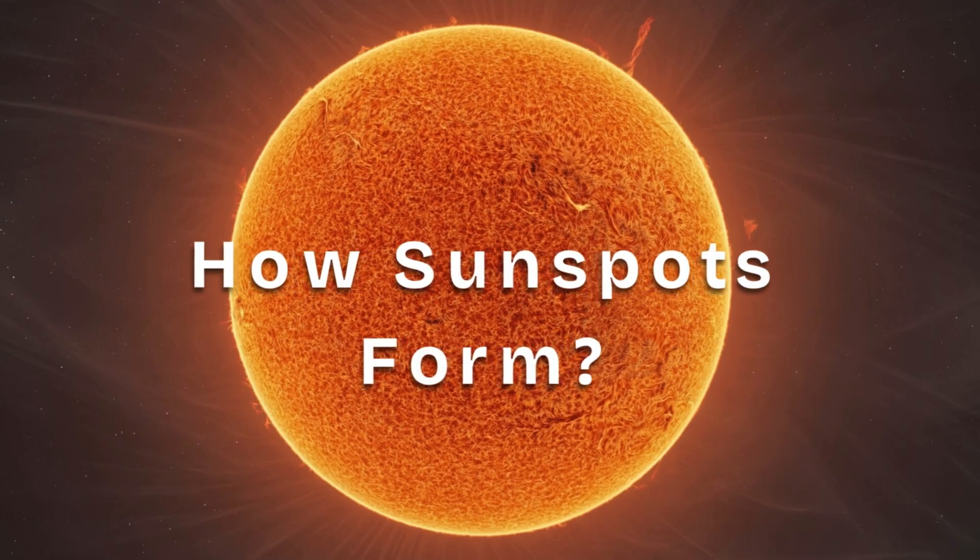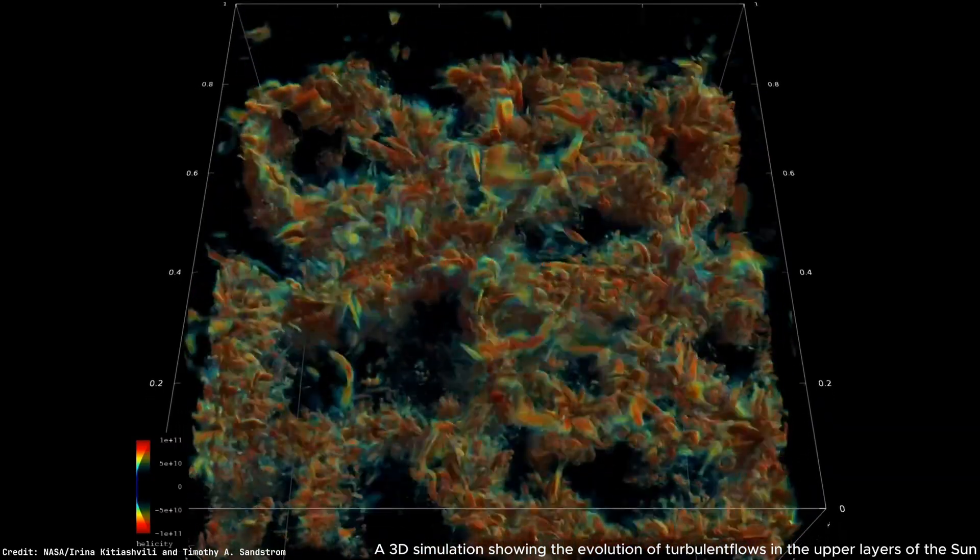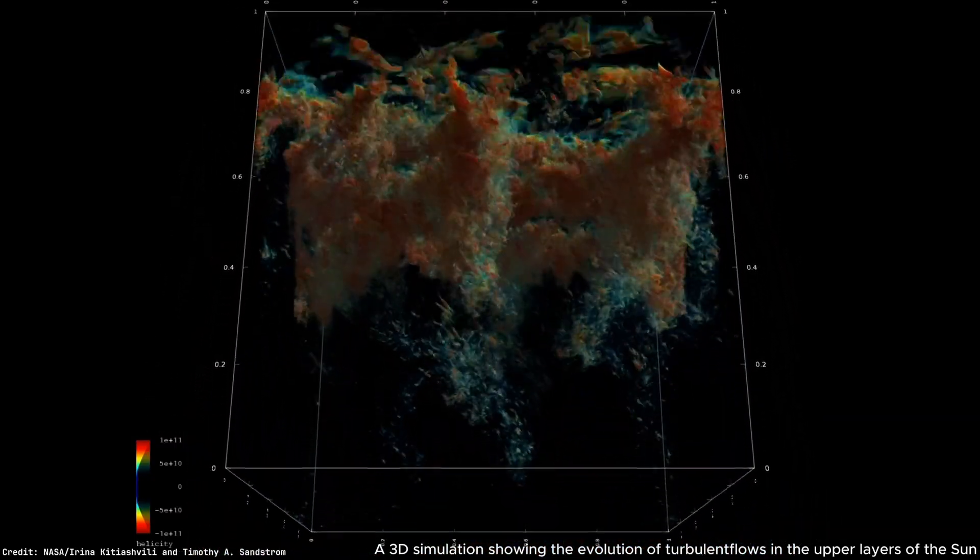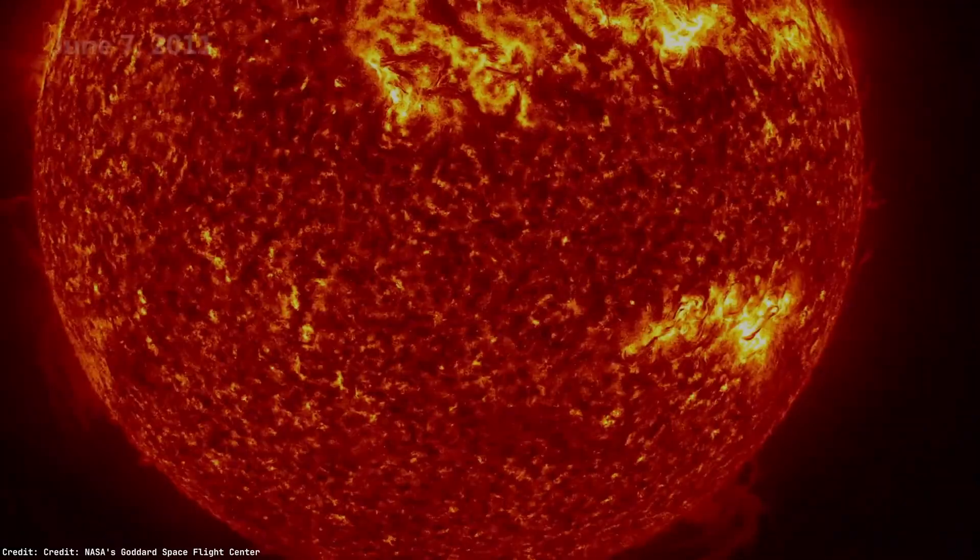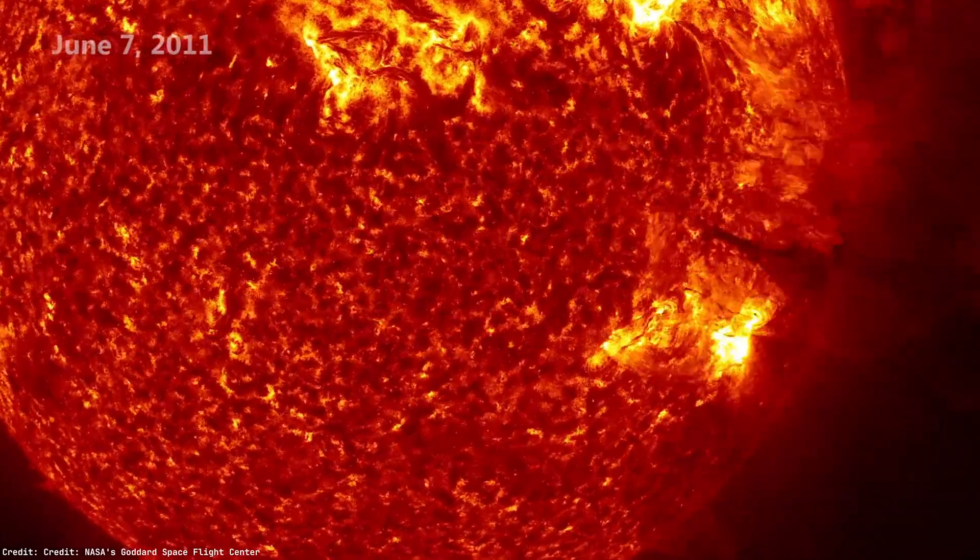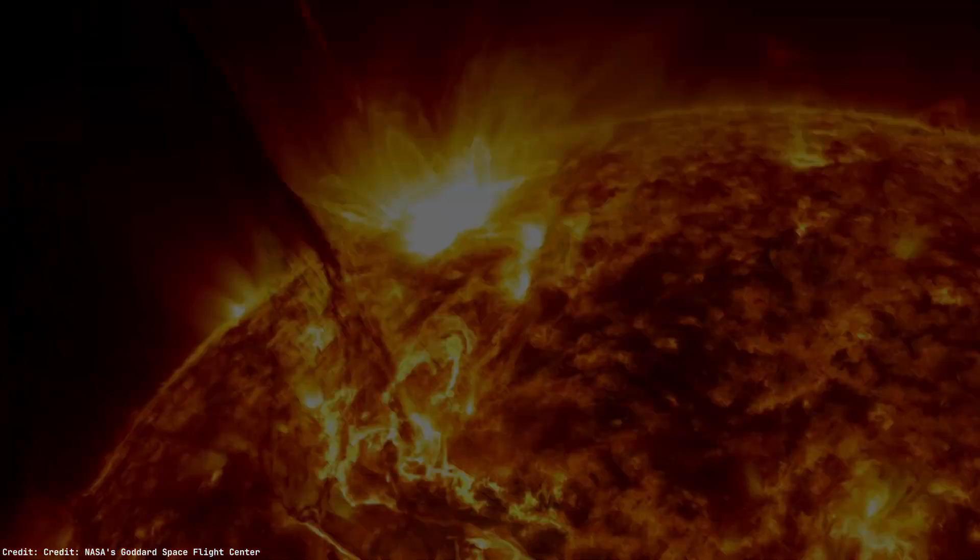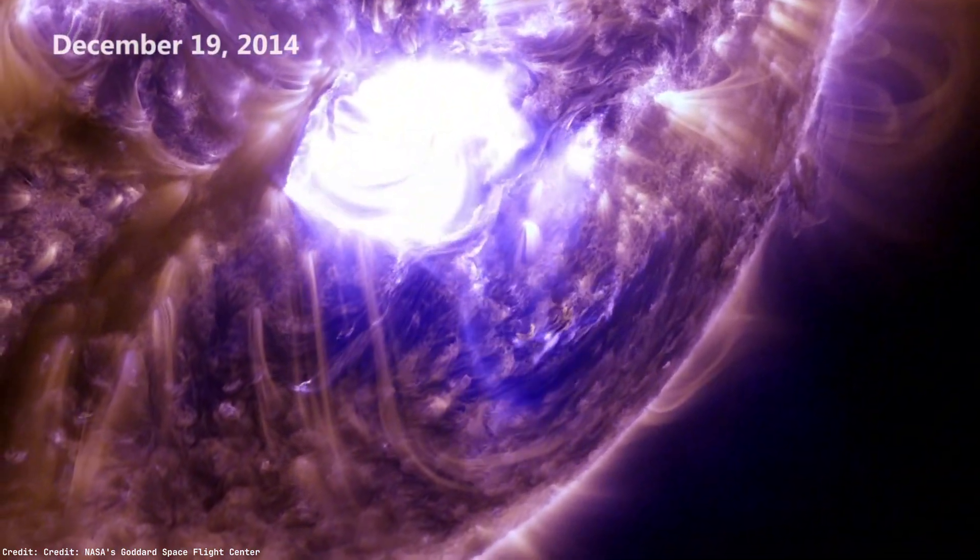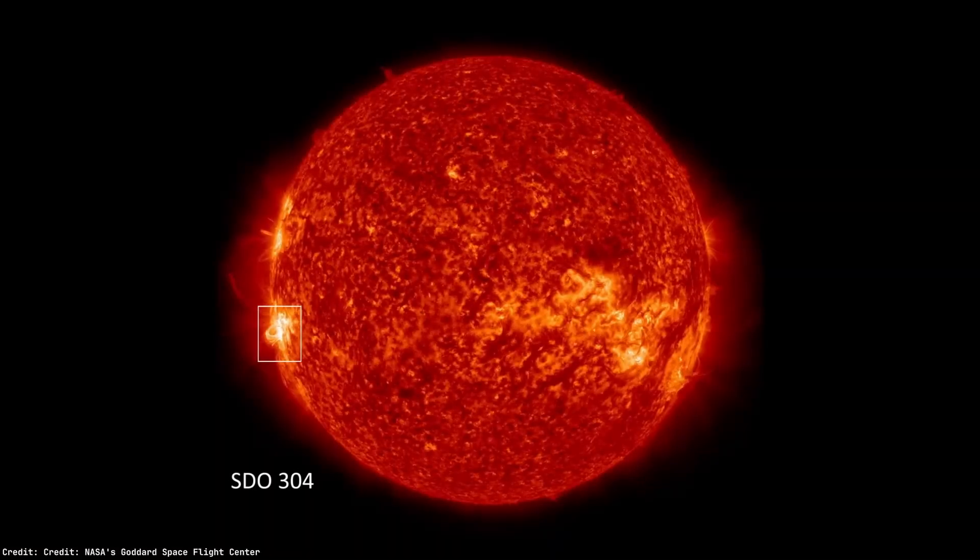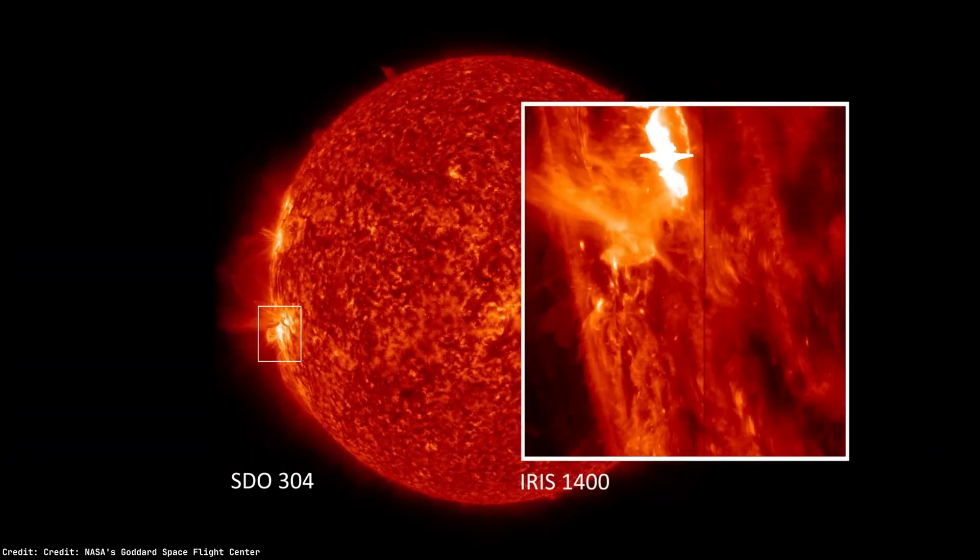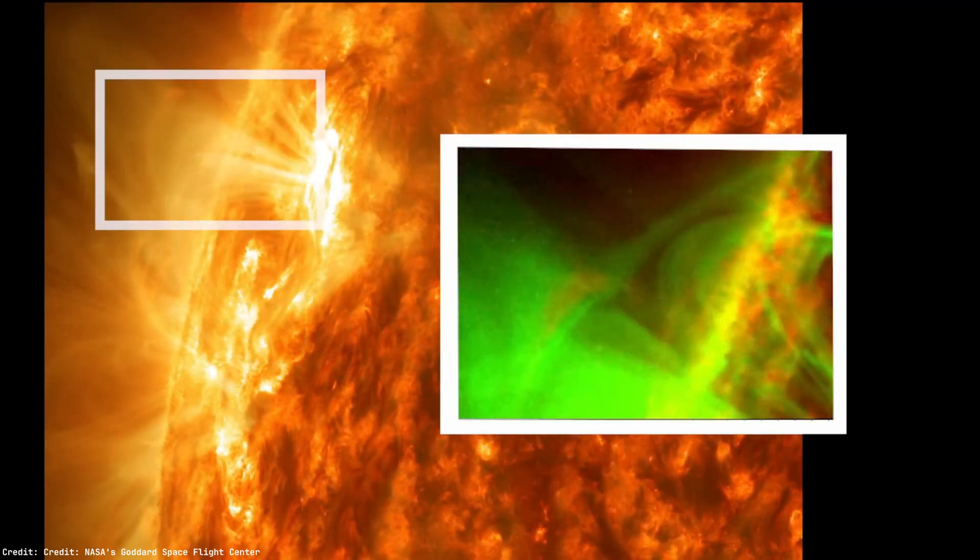So how do sunspots actually form? Scientists are diving into that mystery using powerful computer simulations, basically digital suns, built with advanced physics and raw computing power. What they're seeing is wild. Sunspots form when massive bundles of magnetic field lines rise up from deep inside the sun, punching through the surface like magnetic geysers. It's not just guesswork anymore. We're watching the sun's magnetic skeleton in action, in real time, thanks to cutting-edge models that are helping us understand the hidden mechanics of our star.